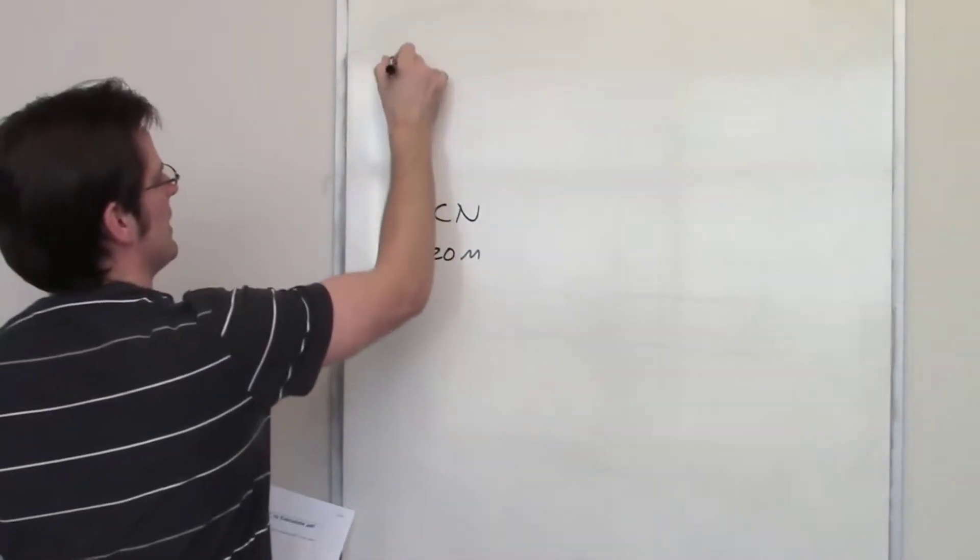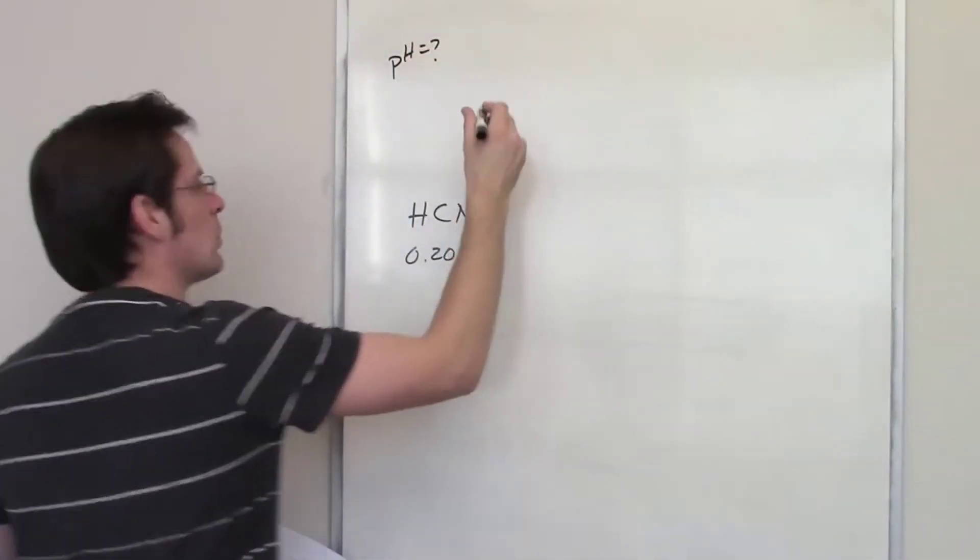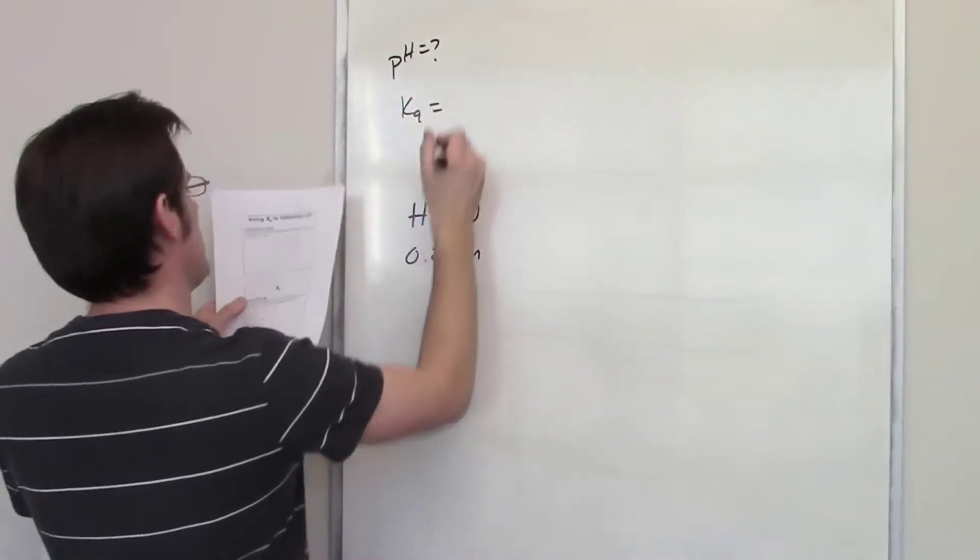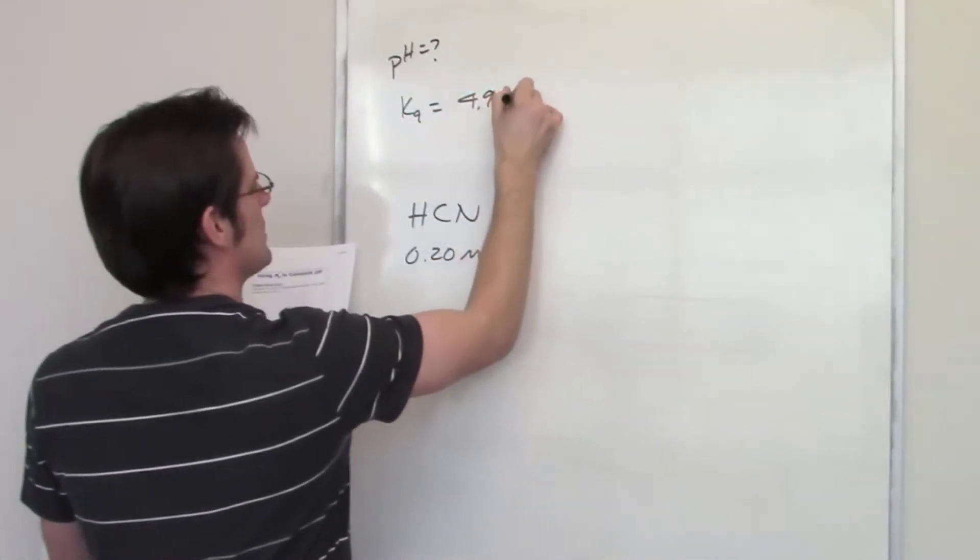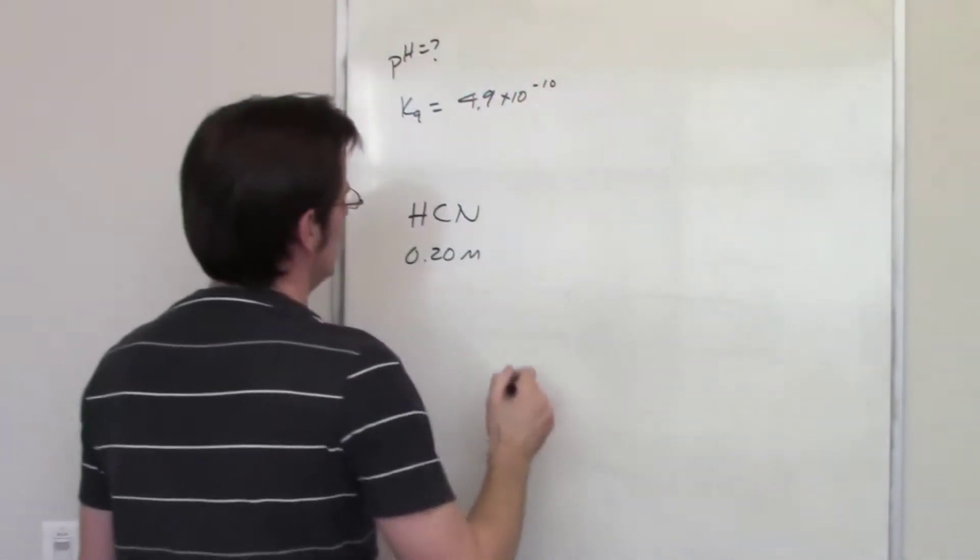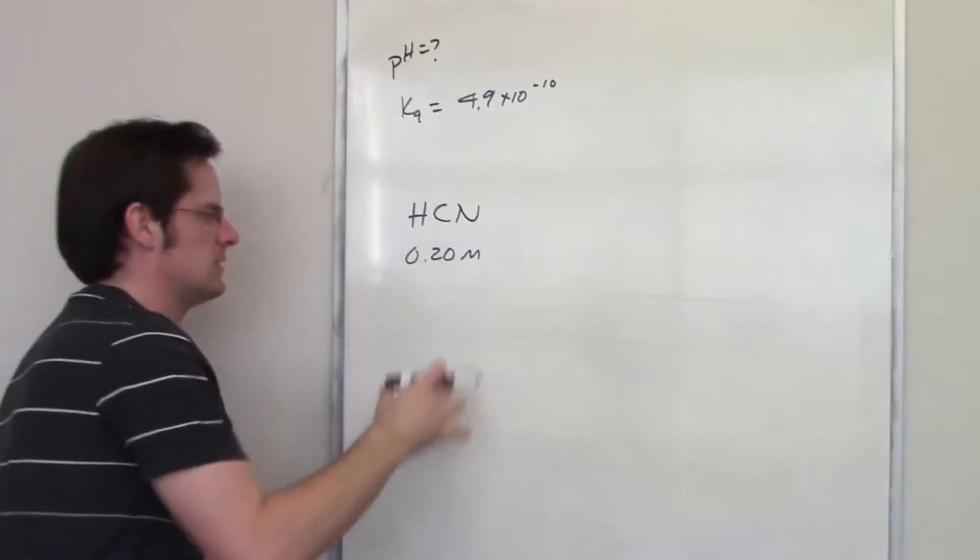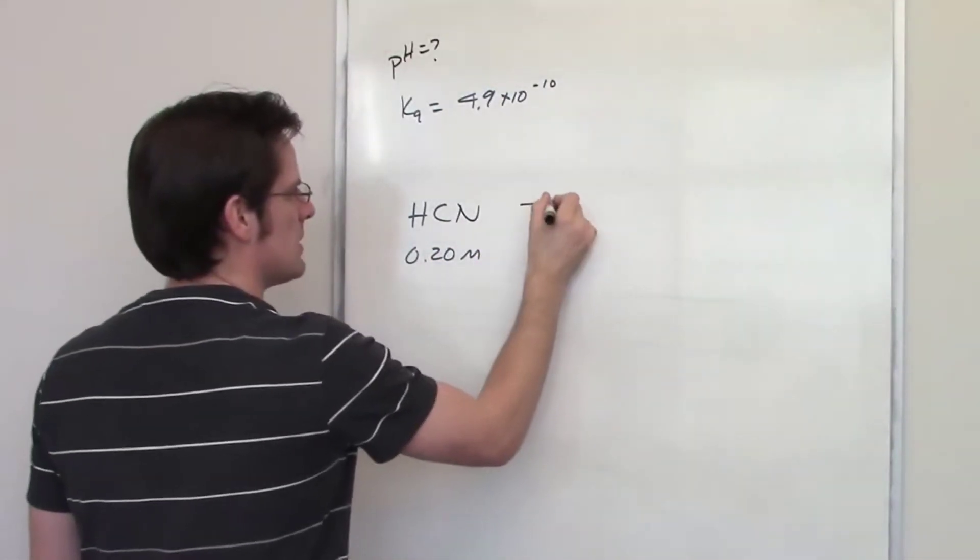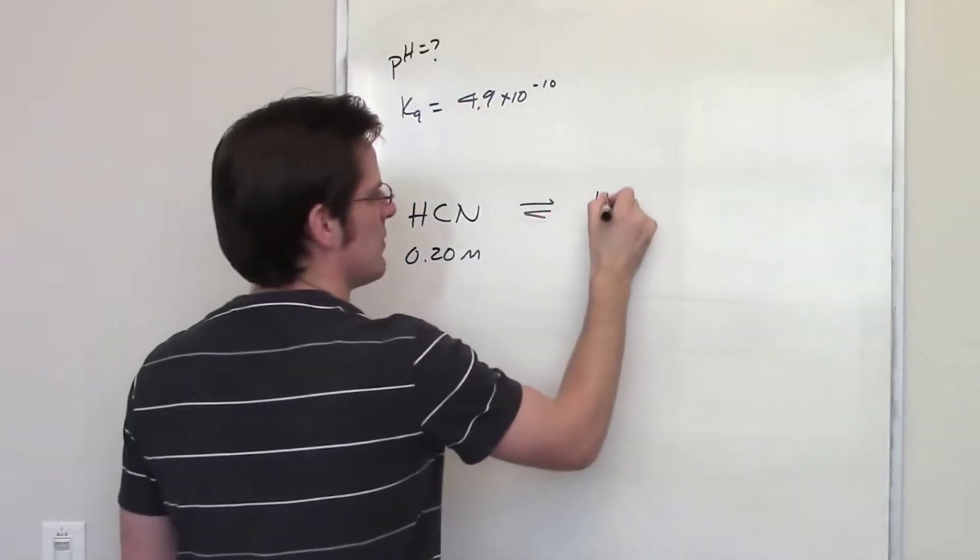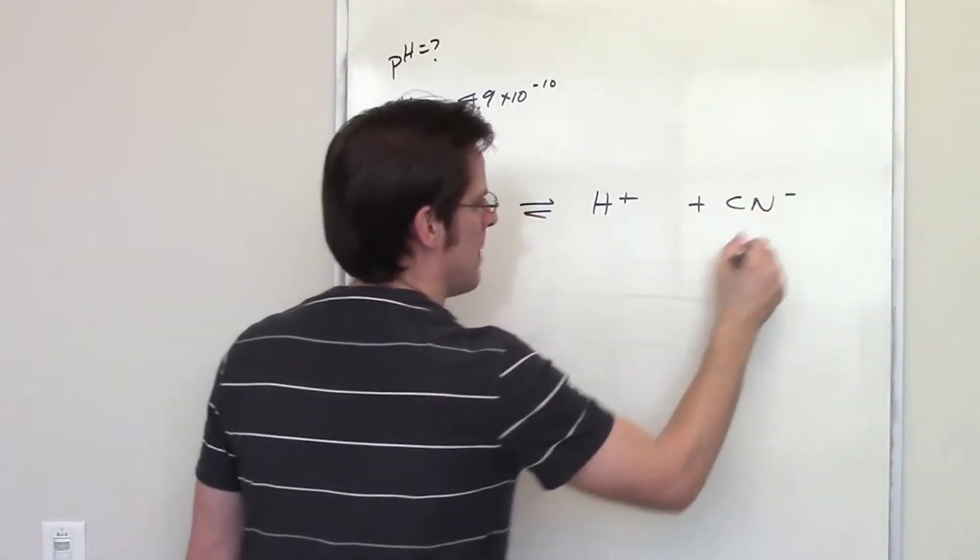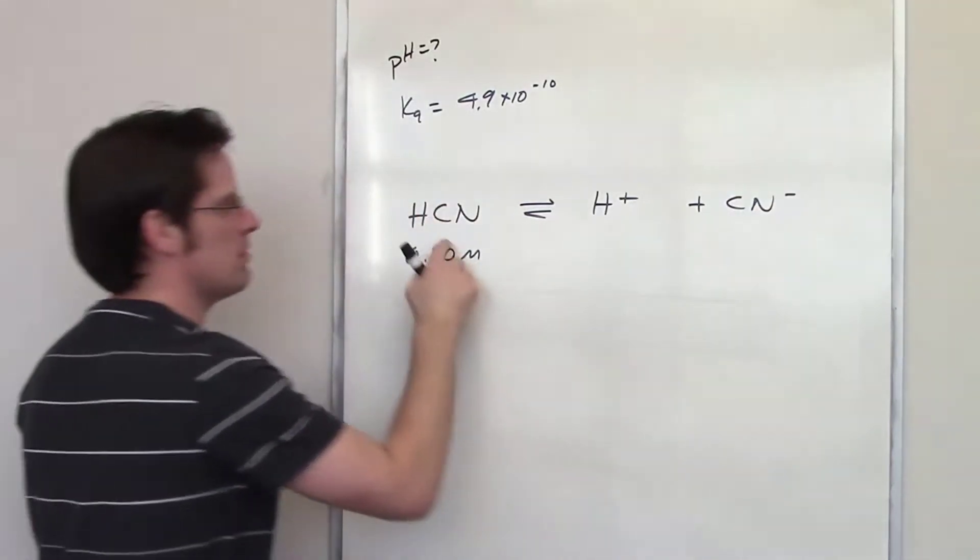We're asked to calculate the pH and we're also given the Ka value for this weak acid as 4.9 times 10 to the negative ninth. How do we determine the pH? Well first of all let's try and figure out what this is going to do. I throw this into an aqueous environment. It's going to dissociate to give H plus or H3O plus and CN minus. CN minus is the conjugate base of this.